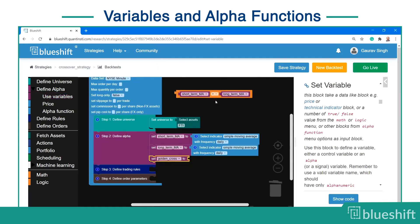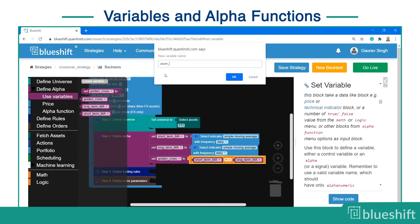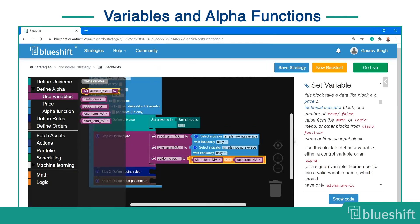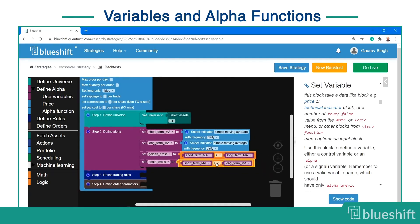Similarly, you can define death cross as shown on the screen. You can make a copy of the logic block from the golden cross. Make sure that the logic block for comparison for death cross's short-term MA is lesser than long-term MA. The golden cross and death cross can also be thought of as alphas as they will drive the trading decision later on.